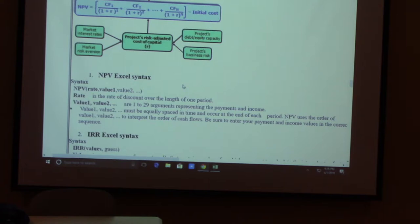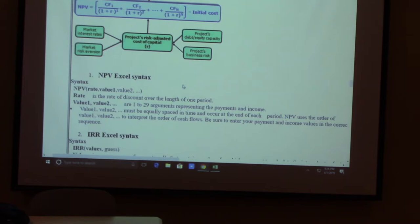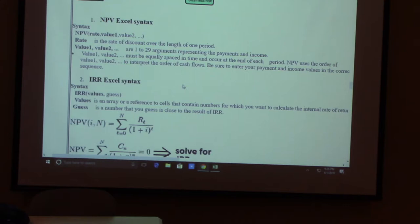If NPV is positive, the project's future income exceeds the cost — it's a good project. If NPV is zero, you break even. If NPV is negative, your future incomes are not sufficient to cover your cost, so you should let this project go. IRR is just a rate — you can use the IRR function in Excel.